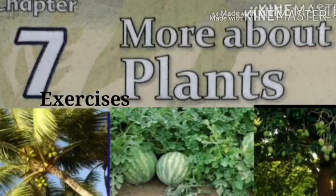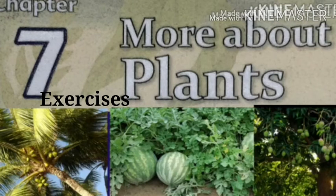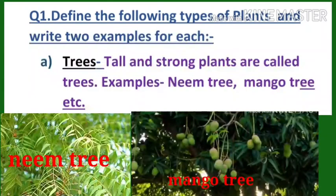In previous class, we will do question answers related to chapter 7, More About Plants. Question number 1: Define the following types of plants and write two examples for each. Number A: Trees.